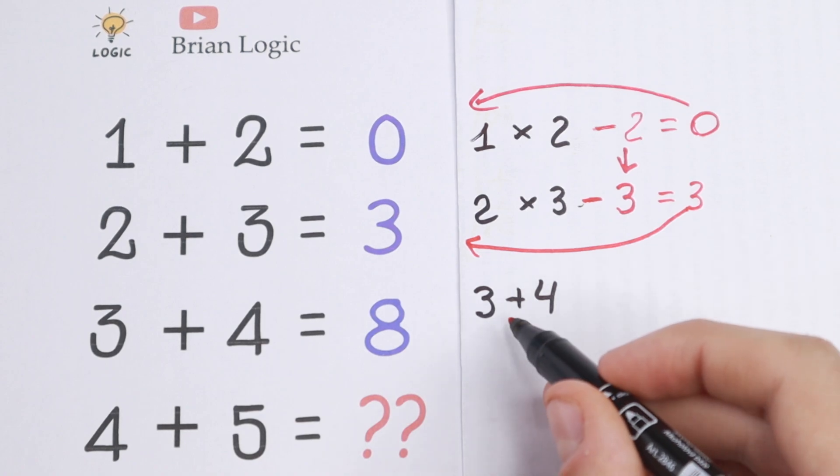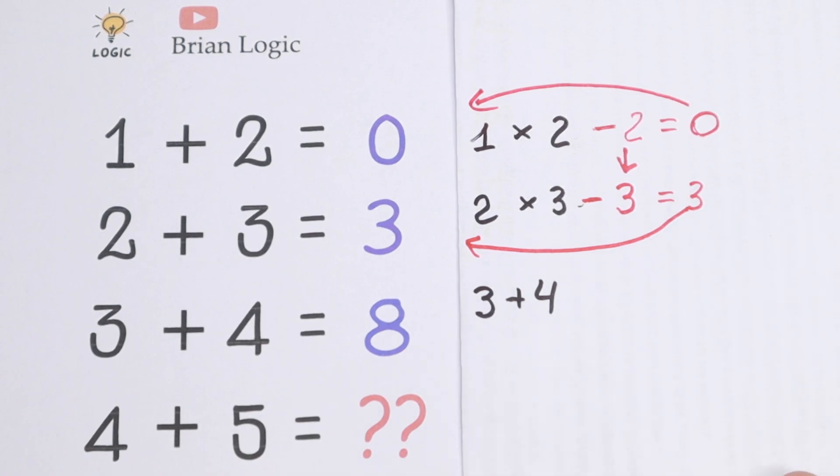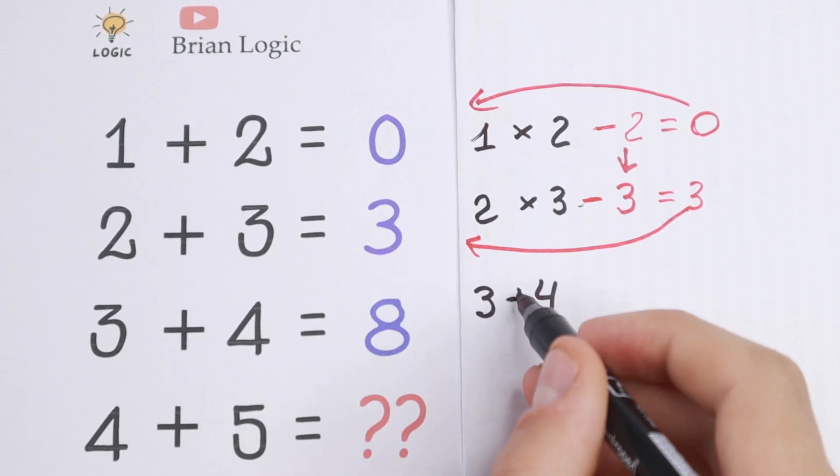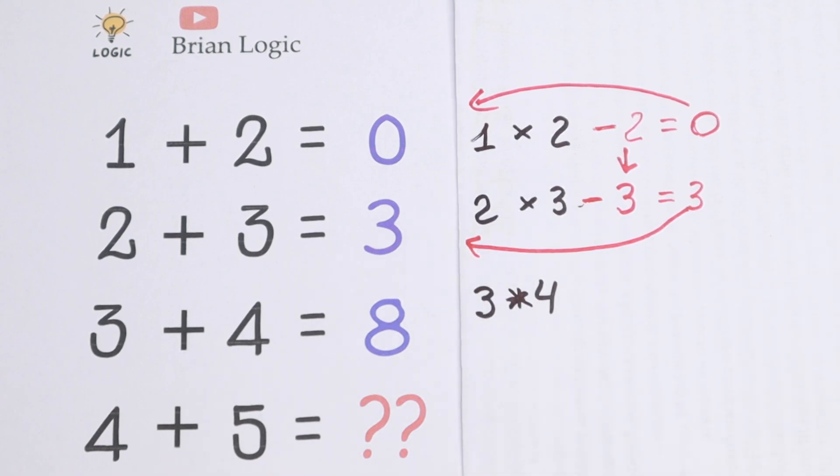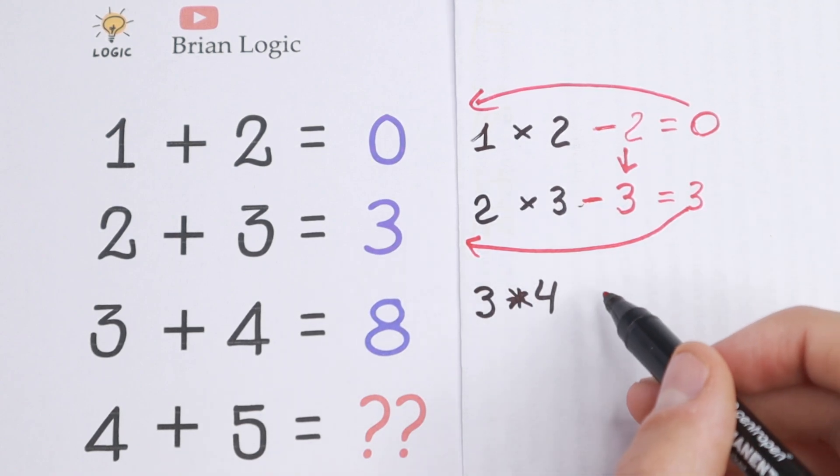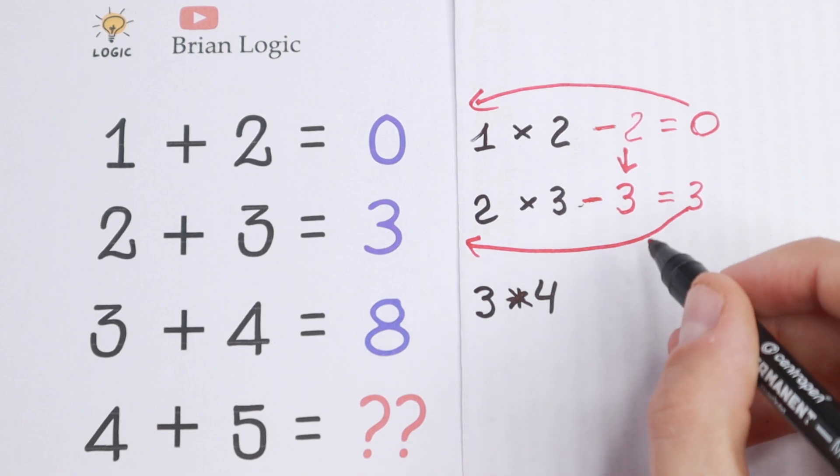And I go further, so we have 3 times 4. So I write this as plus, but right here we need to write this as multiplication sign. So if we multiply this 3 by 4, we will have 12. But we have a natural order, so we need to subtract the next one minus 4.